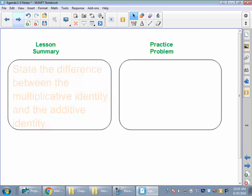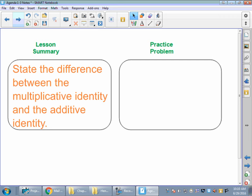So lesson summary. All you need to do is tell me what's the difference between the multiplicative identity and the additive identity. Identity is a key word, so you want to probably say what happens with that, and then multiplicative and additive would be helpful.